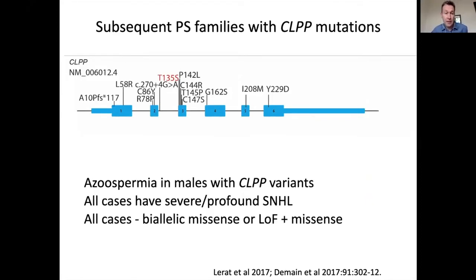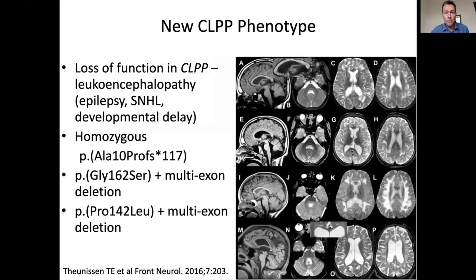Since we published those findings in 2013, there have been a number of subsequent families reported with Perrault syndrome and changes in CLPP. Interestingly, males affected with changes in this gene have been shown to have fertility problems such as azoospermia. They all have very severe or profound hearing loss and biallelic missense or a loss-of-function variant plus a missense variant — there are no individuals with two loss-of-function variants. A subsequent paper from Margot van der Knaap's group in Amsterdam showed that more deleterious variants in CLPP are associated with a severe neurological phenotype with leukodystrophy.